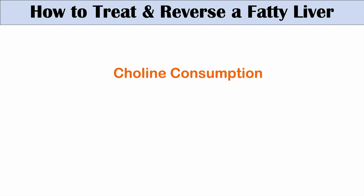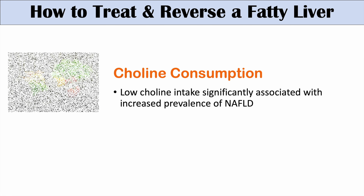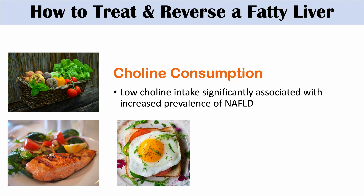The last important topic is choline consumption. Choline has been found to be very important with regards to the onset and progression of non-alcoholic fatty liver disease. Low choline intake is significantly associated with increased prevalence of NAFLD. The liver is the main site of choline metabolism, and choline metabolism can be altered by genetics and hormonal imbalances. You can get choline from many vegetables, fish like salmon, and eggs — which ties in well with the Mediterranean diet.